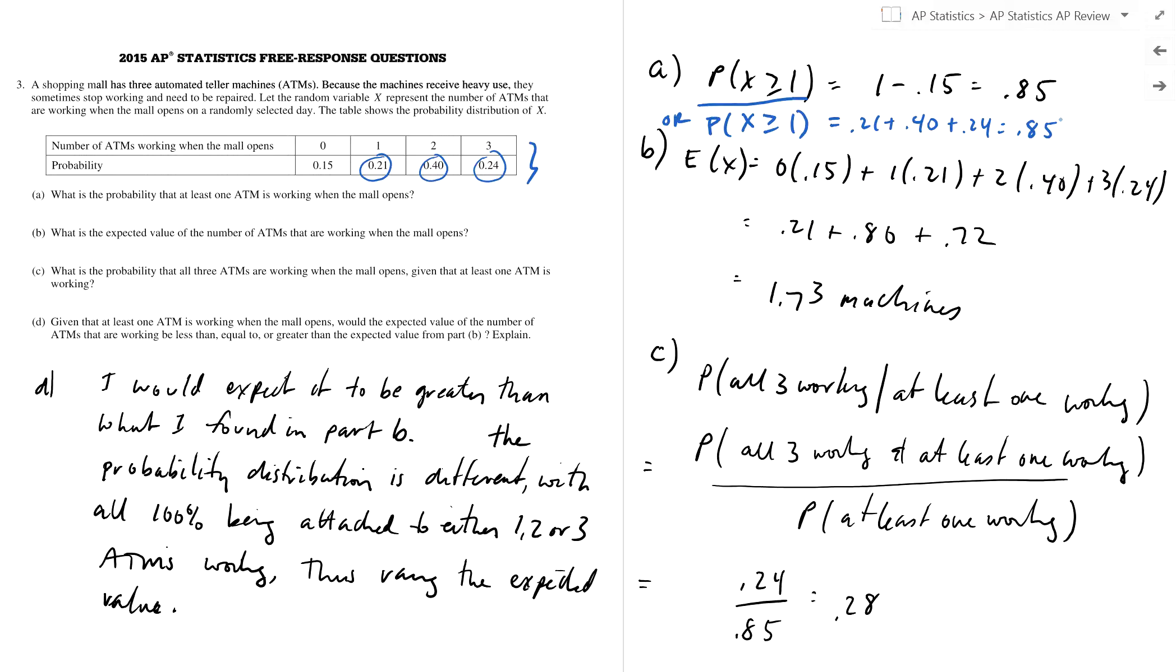Either way you're good to go. Part B: what's the expected number of ATMs that are working when the mall opens? The expected number: zero times 0.15 plus one times 0.21 plus two plus three times that. That is just number times probability, normal expected value things, to get 1.73 machines.